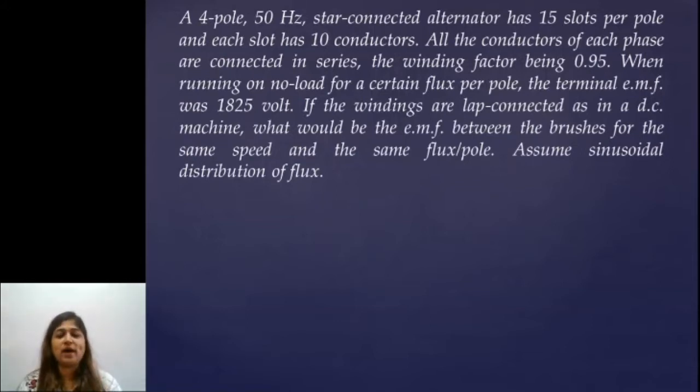What are the two parts? First part is to consider it as an alternator and get flux per pole out of it because the voltage induced is given. Once you get the flux per pole value, we will substitute that flux value into DC equation, DC machine data and we will get the value of EMF induced in the DC machine.